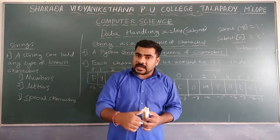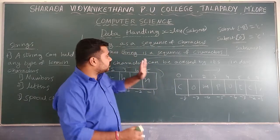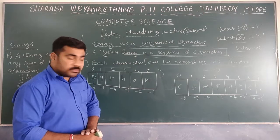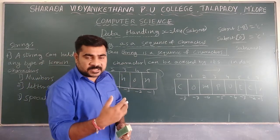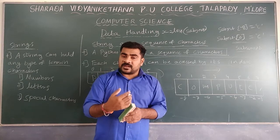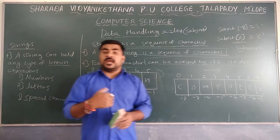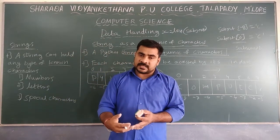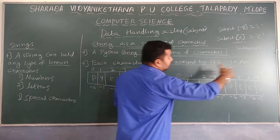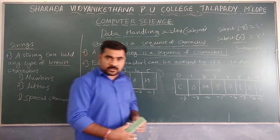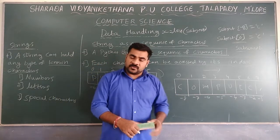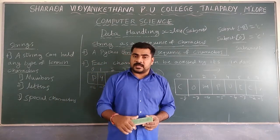Just to understand: string is one more built-in data type; it is a sequence of characters, and each character can be accessed by index values. There are two types of indexing: forward indexing starts from 0, and backward indexing starts from minus 1 down to minus length. We will study strings in detail in the upcoming string chapter.